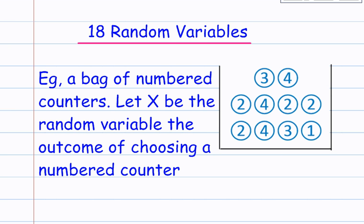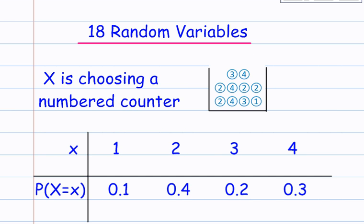For example, a bag of numbered counters, which you can see here. There are 10 counters. Let X be the random variable, the outcome of choosing a numbered counter. So I'm going to pull a counter out of the bag. I can represent this as a table.